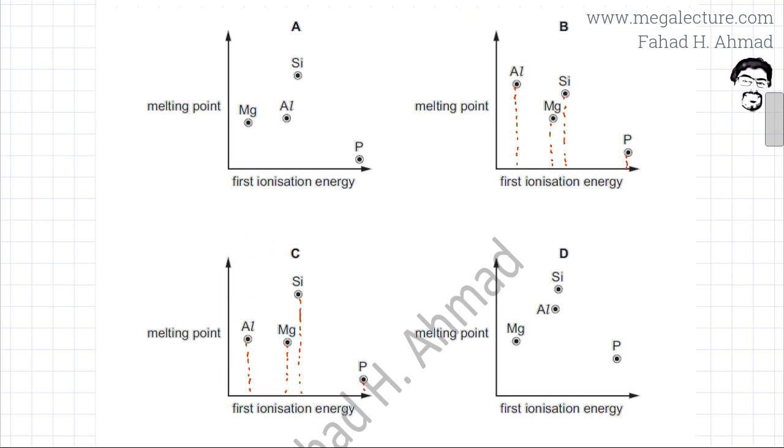Phosphorus having the lowest melting point, aluminum and magnesium having the second highest, and silicon having the highest because it is a macromolecular structure. So the correct answer for this question is going to be option C.